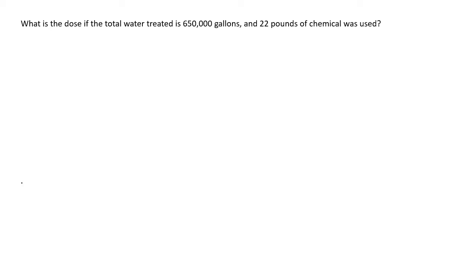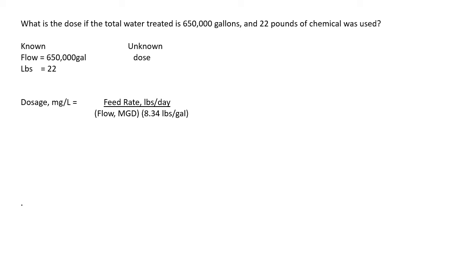What is the dose if the total water treated is 650,000 gallons and 22 pounds of chemical was used? What we know: flow of 650,000 gallons, 22 pounds of chemical. The unknown is the dose. Our dosage formula requires flow in MGD, but our flow is in gallons, not million gallons — so we're going to have to convert that.